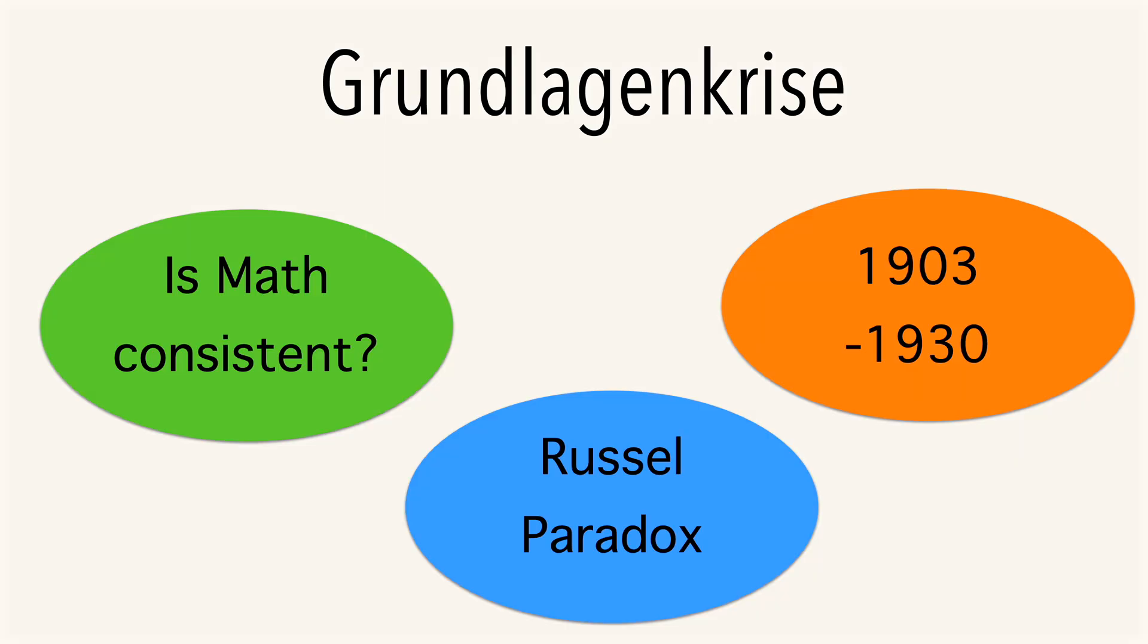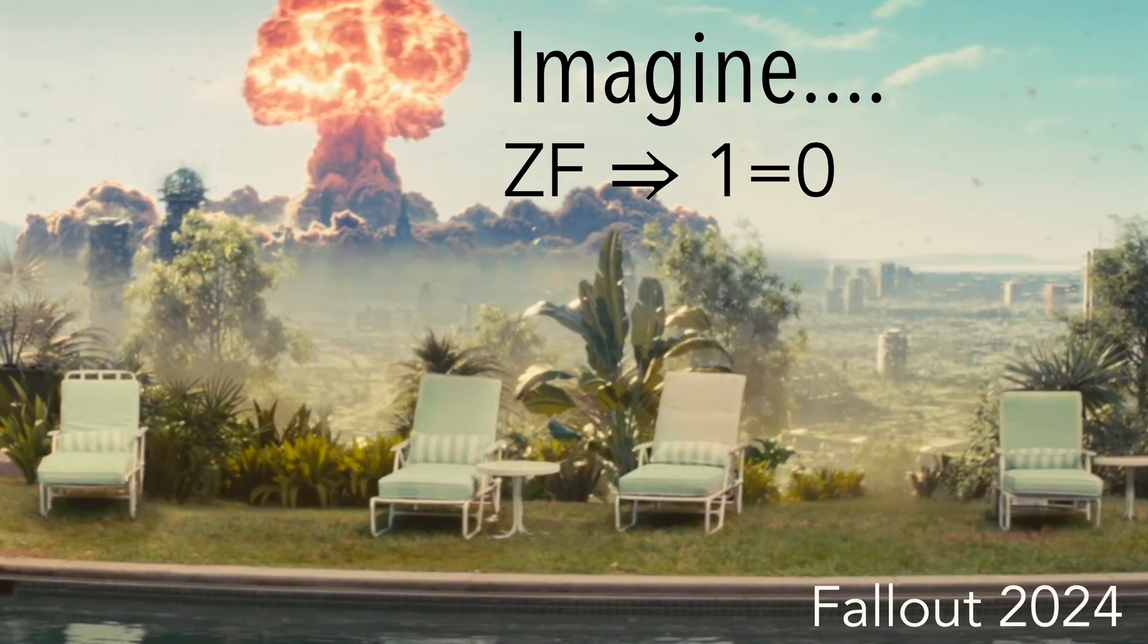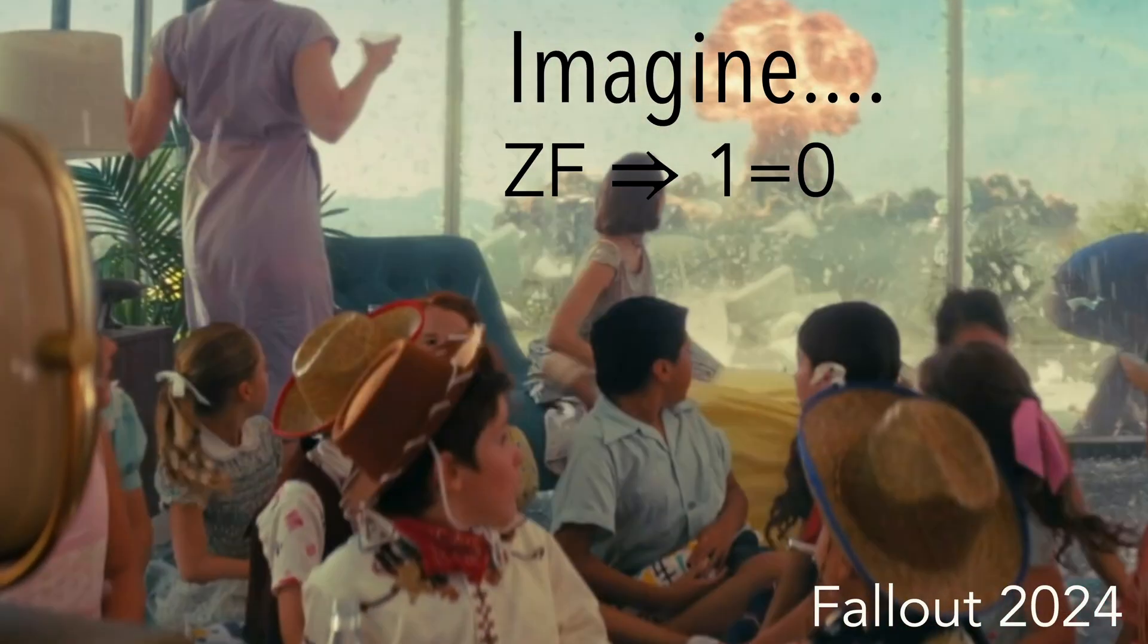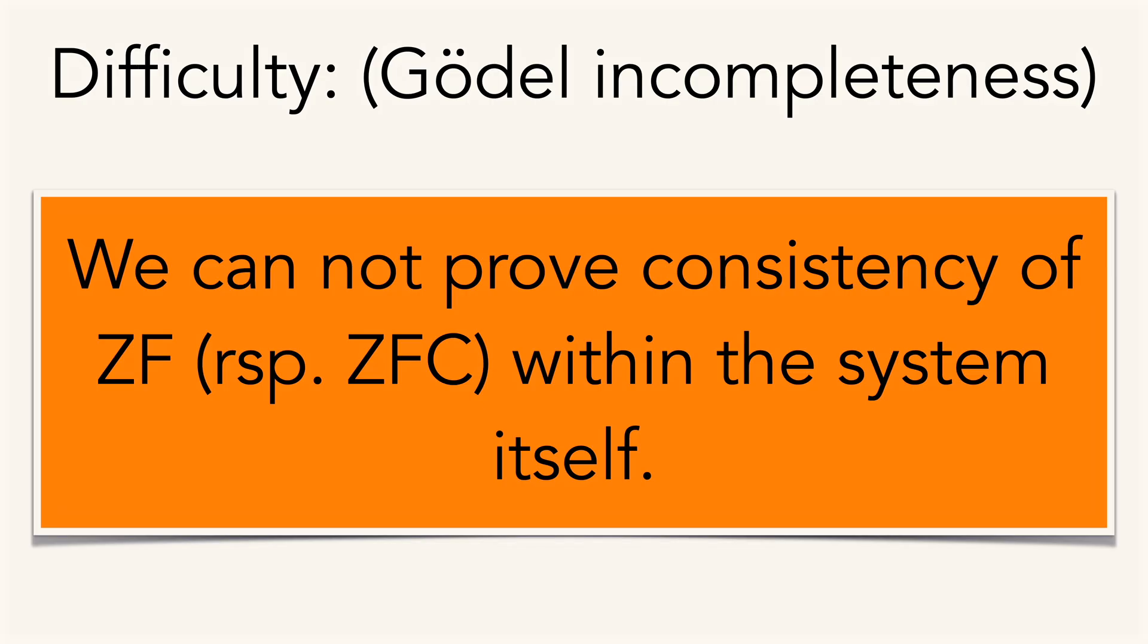Another motivation to look at the discrete is to escape from the Zermelo-Fraenkel axioms. What if somebody would prove that Zermelo-Fraenkel is inconsistent? The fundamental difficulty is that we cannot prove consistency of ZF within the system itself.